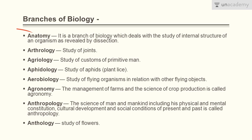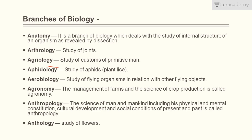The first branch of biology is anatomy — it is a branch of biology which deals with the study of internal structure of an organism as revealed by dissection. Next is orthology — the study of joints. Agriology is the study of customs of primitive men. Aphidology is the study of aphids, that is plant lice.